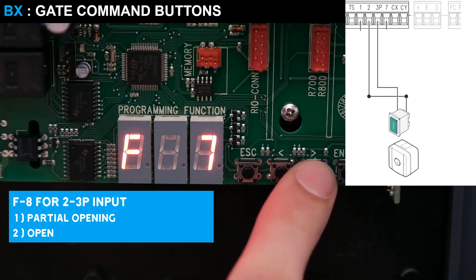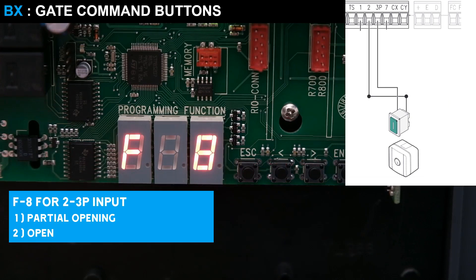Or use function F8 to set the 3P input with the functions: partial opening or opening command.